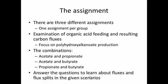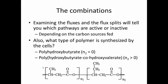So you'll answer the questions to learn about the fluxes and the flux splits, which are important in this case, where the carbon is going. And it goes in different places depending on what acids you're looking at. And you'll look at the given scenarios. So examining these fluxes and these flux splits will tell you which pathways are active or inactive depending on the carbon sources that have been fed to the Ralstonia eutrophia bacteria.